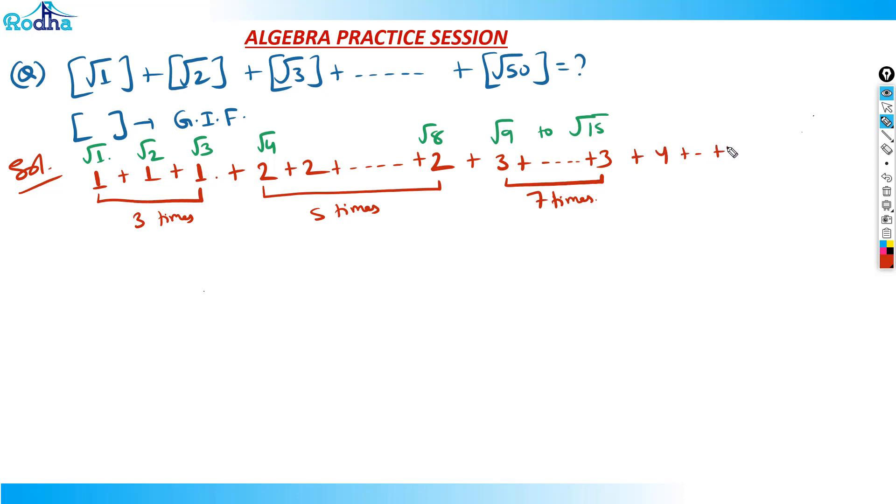4 will appear 9 times, then 5 will appear 11 times. Then 6 will appear 13 times. We have to stop at √50 actually. So 6 will appear 13 times, that is √36 to √48. But now I'm left with only 2 values: √49 and √50. I think both values are 7. We have got both values are 7, so 7 plus 7.